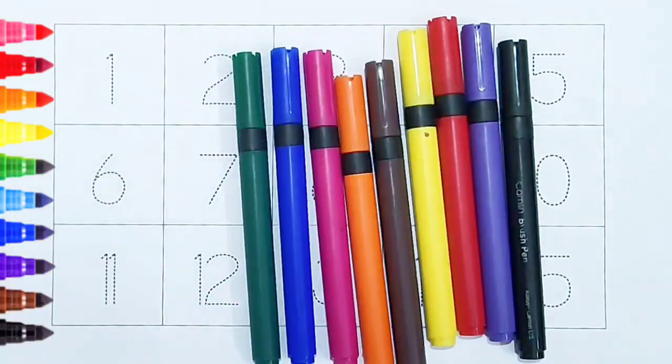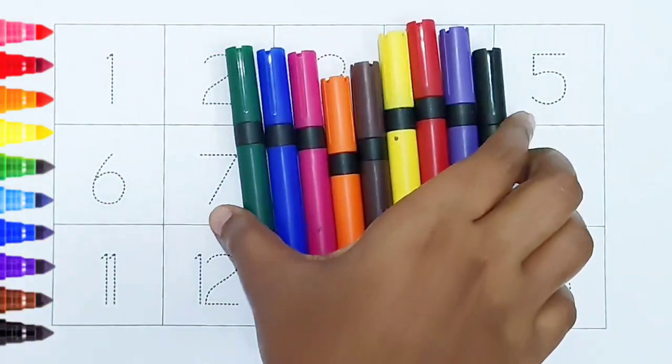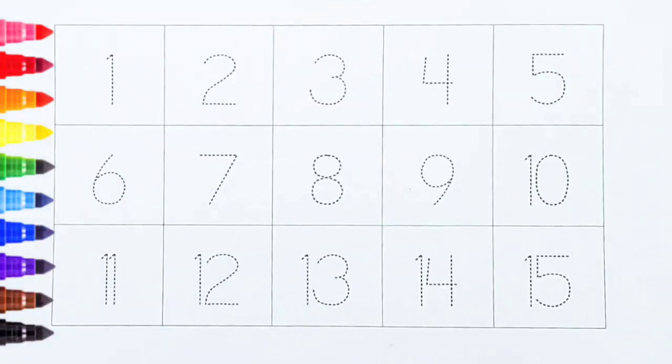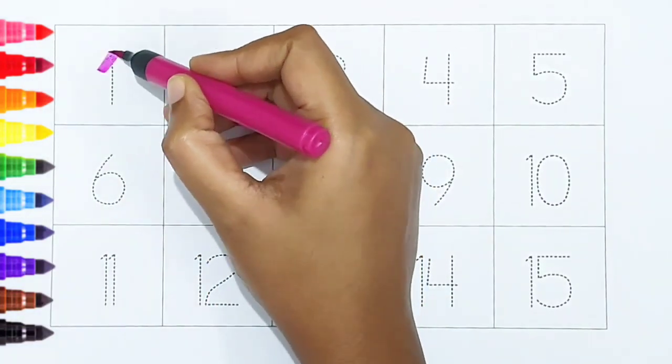Hi kids, today we can learn the numbers from 1 to 15. Let's begin. One, dark pink color. One, dark pink color.